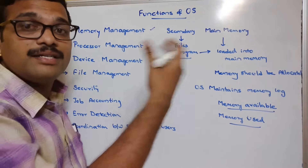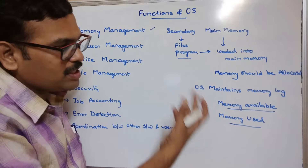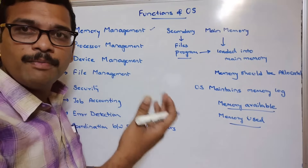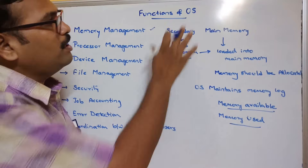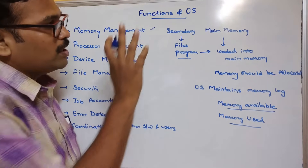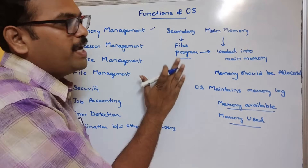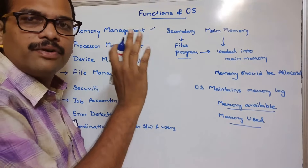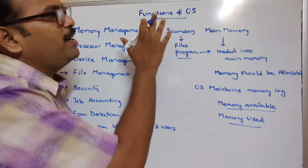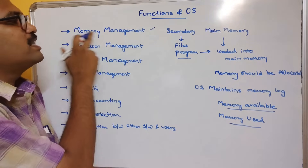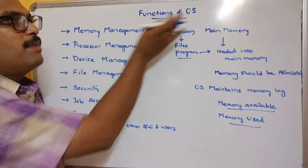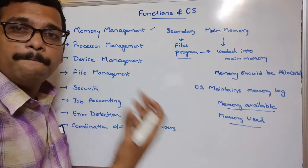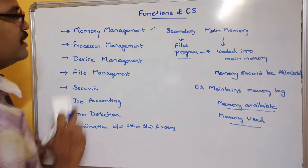Whenever a program is loaded into main memory for execution, memory is allocated. When I/O operations are required or the process execution is completed, the memory will be deallocated by the operating system. So allocation and deallocation of memory is done by the operating system — this is what we call memory management.